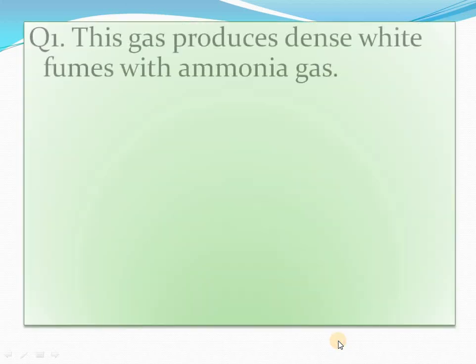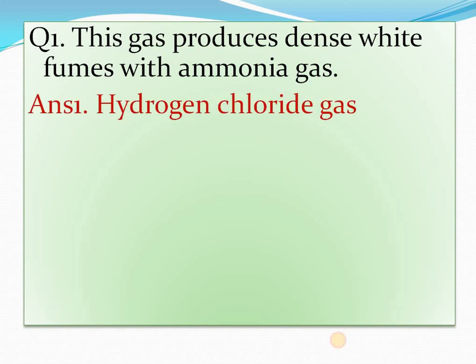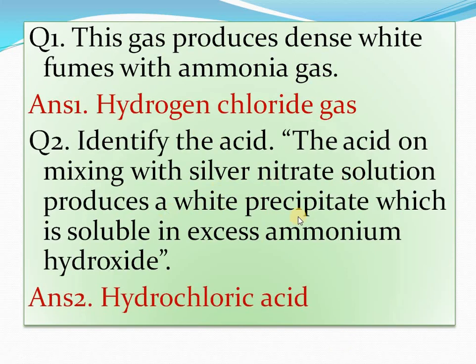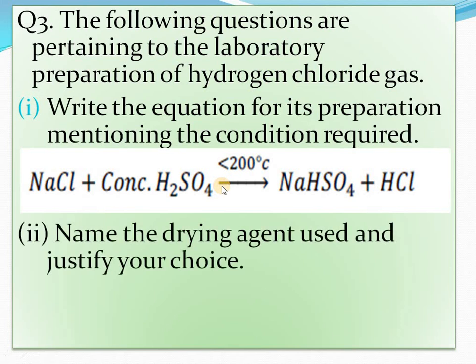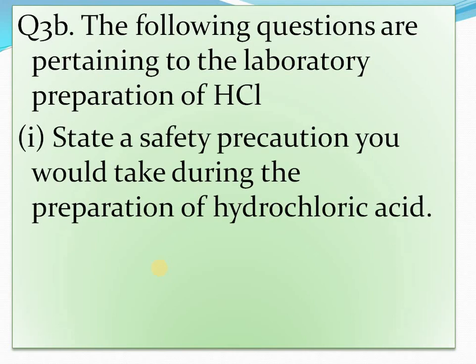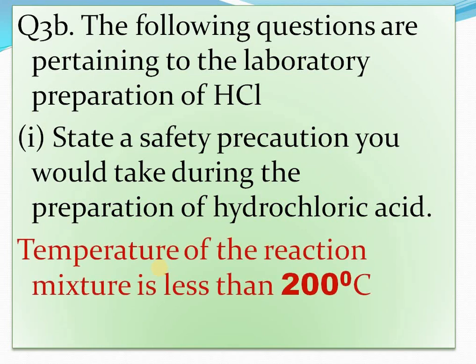Questions: Which gas produces dense white fumes with ammonia? — Hydrogen chloride gas. What acid when mixed gives white fumes soluble in excess ammonia? — Hydrochloric acid. Regarding lab preparation: which drying agent is used? — Concentrated sulfuric acid, because it does not react with HCl gas. Temperature must be kept below 200°C — if temperature exceeds 200°C, Na₂SO₄ is formed, which is a hard sticky substance. If it sticks to glass, overheating can occur, which may cause the flask to crack or break.